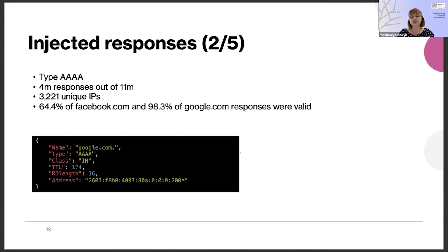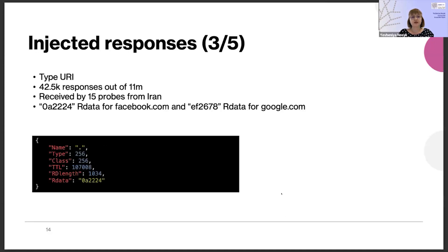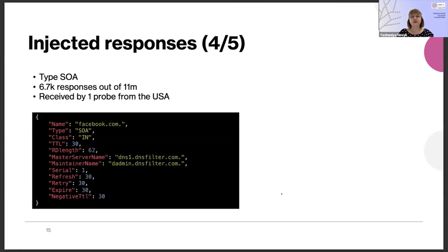Similar trends were seen for the AAAA response type, the second most popular, where the ratio of correct responses was even higher — almost 65% for Facebook and 99% for Google.com requests. Additionally, URI type responses were received on some probes from Iran, triggered by the facebook.com and Google.com domain names. There was also one RIPE Atlas probe that received an SOA response type when requesting the facebook.com domain name, which appears to have been generated by a DNS filtering service.